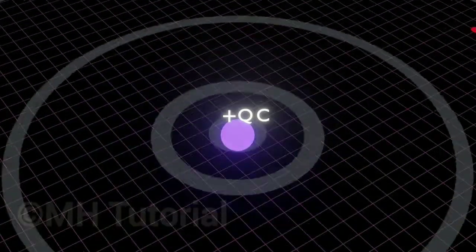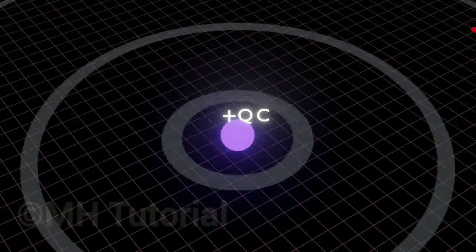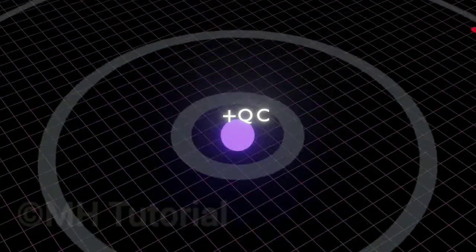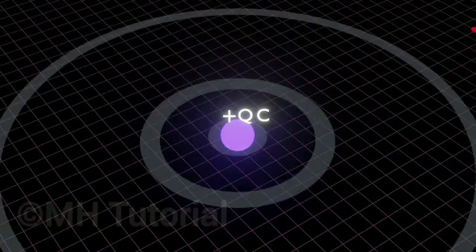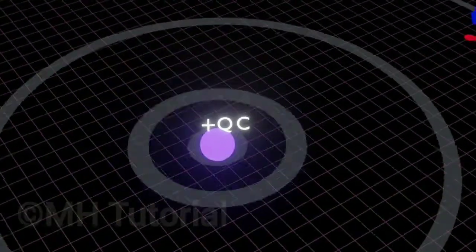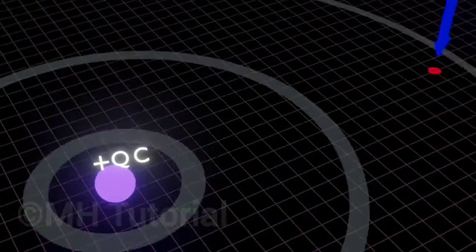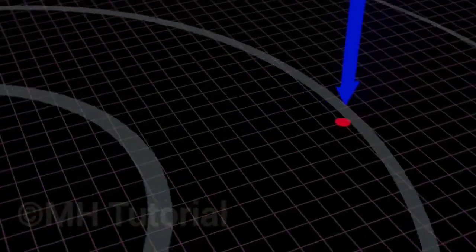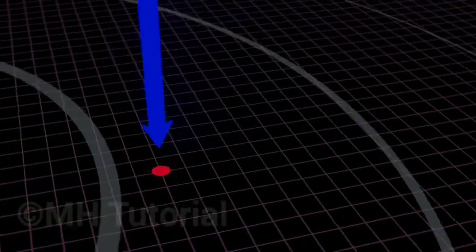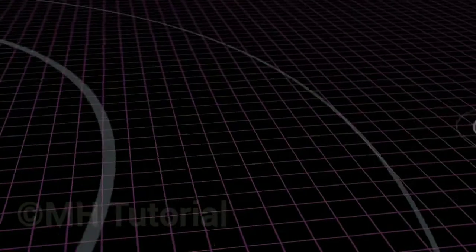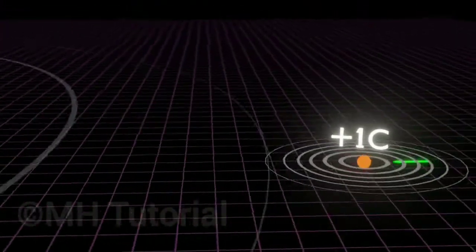Since both objects carry a positive charge, a repulsive force is acting between them. You have to apply a certain amount of energy to place the one Coulomb particle at the desired red point. Why is this application of energy necessary? Because the force acting on the one Coulomb particle is outward.